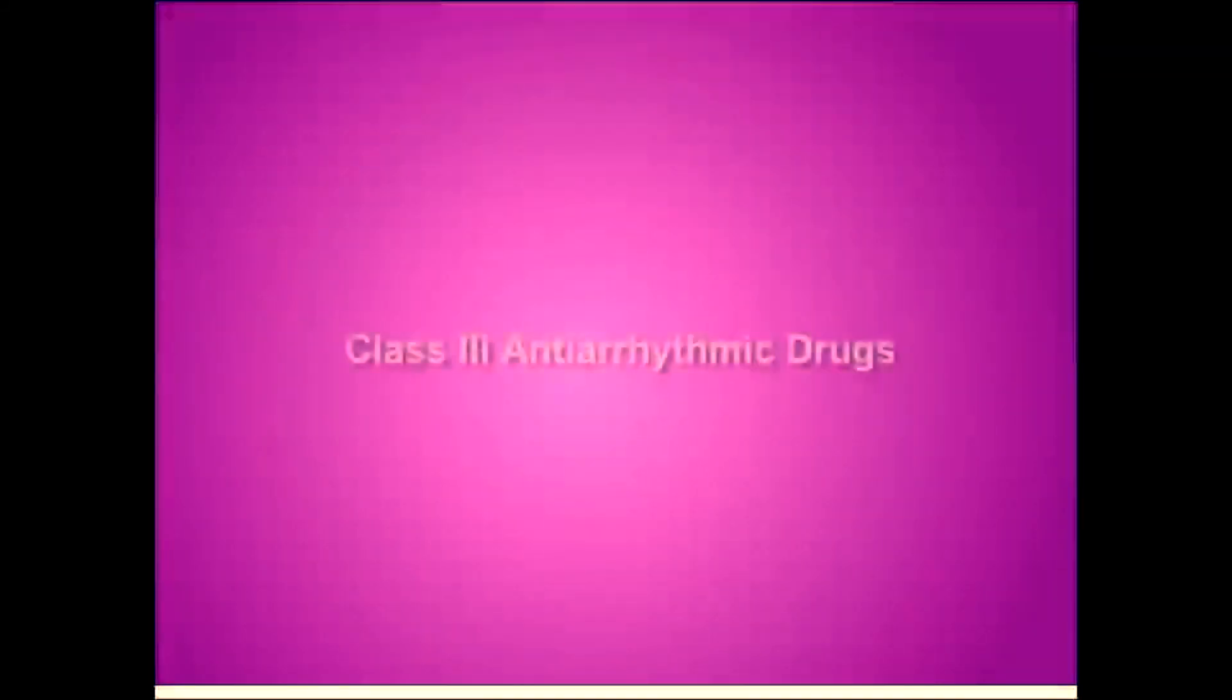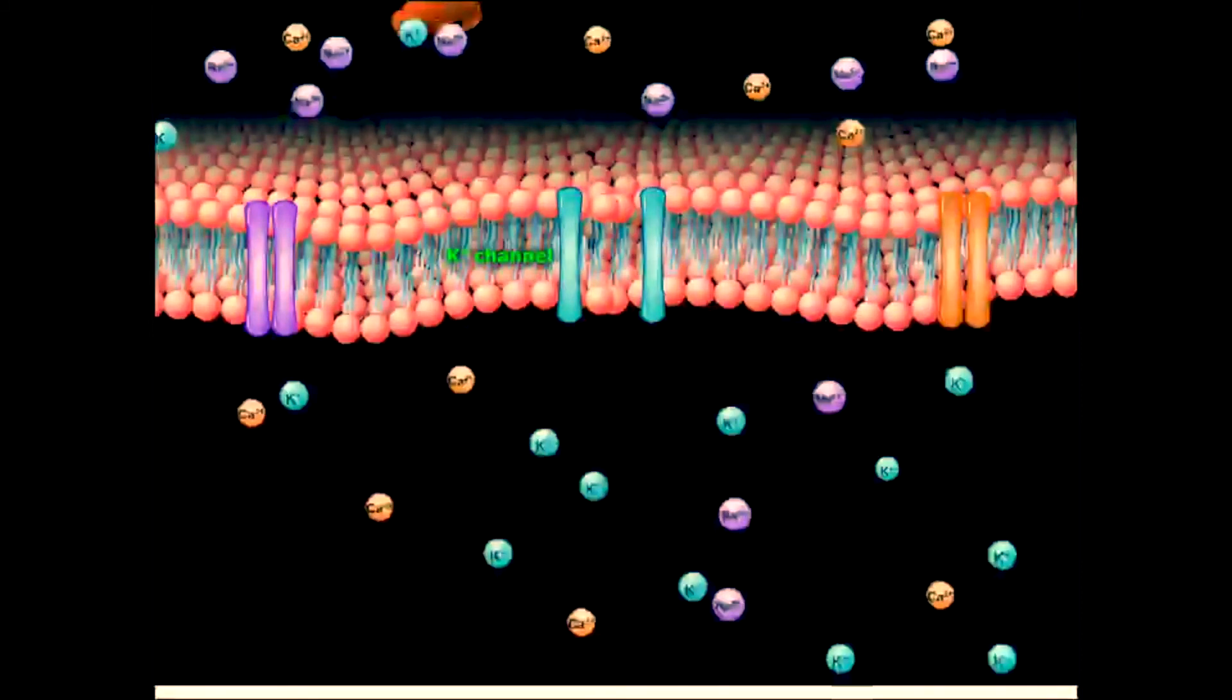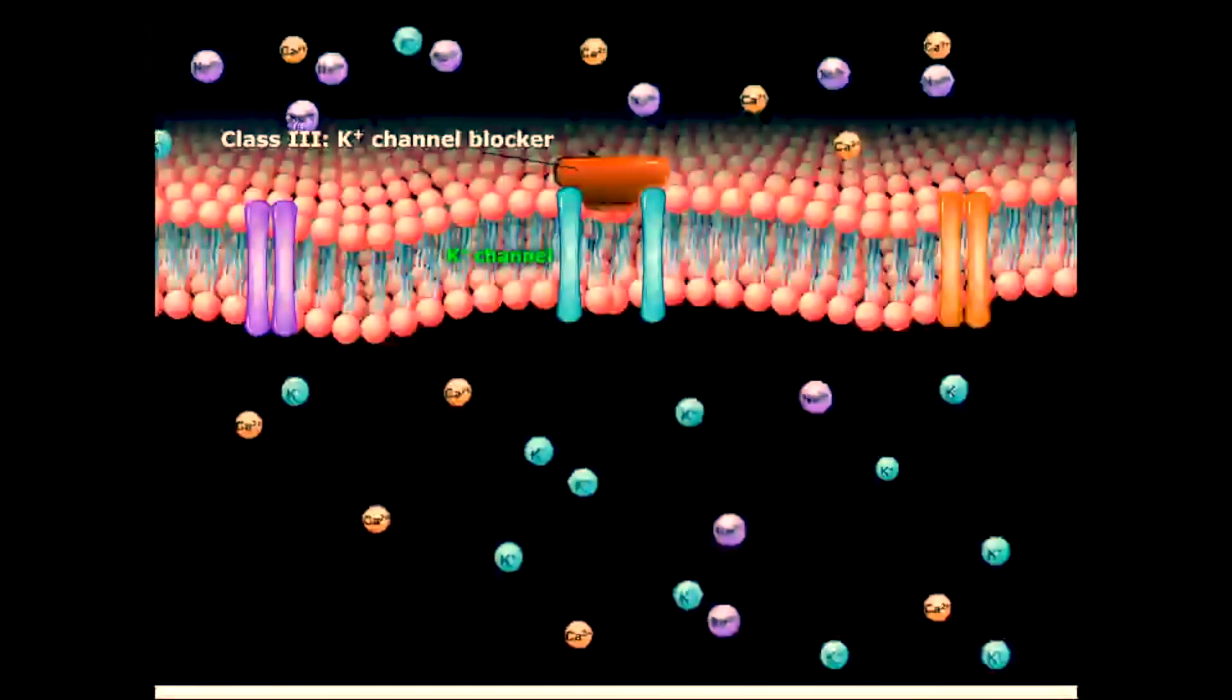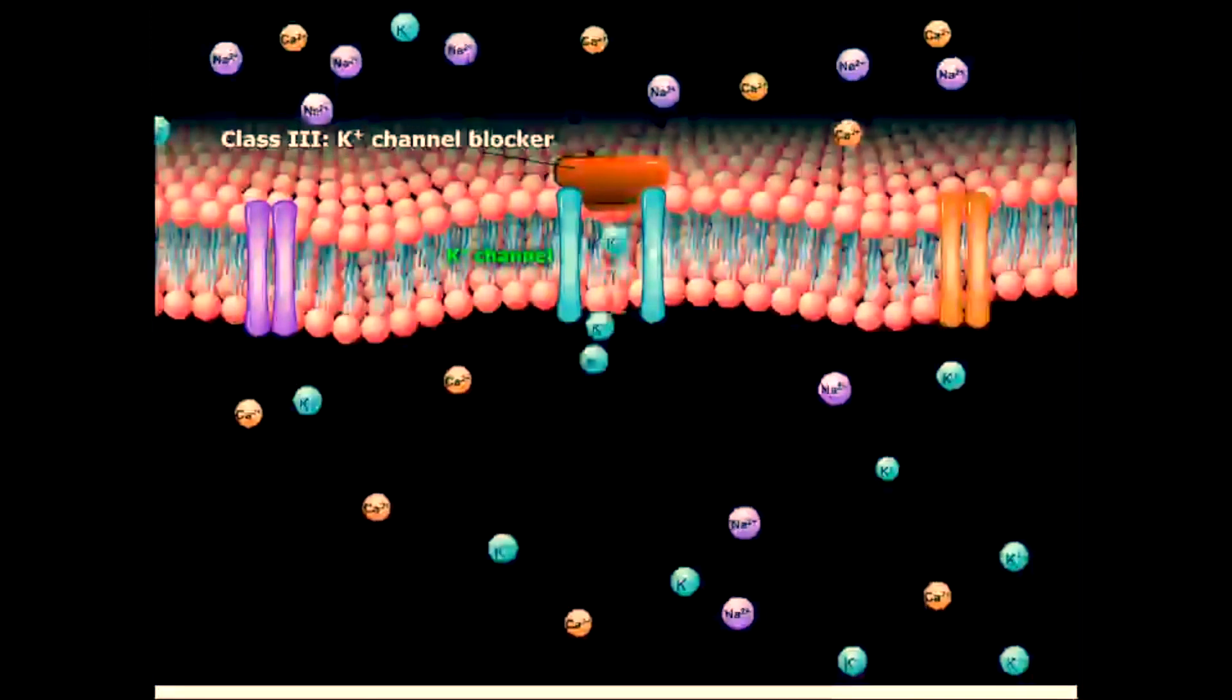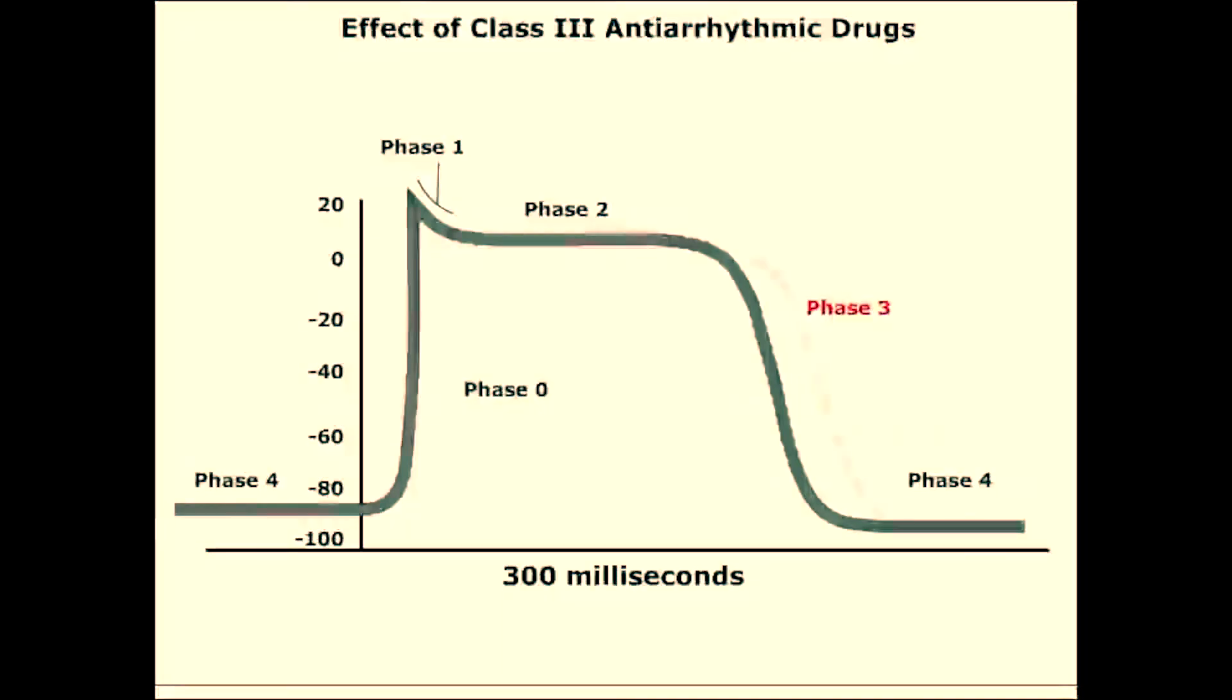Class 3 antiarrhythmic drugs, such as amiodarone, are potassium channel blockers. By blocking these channels, they prevent the efflux of potassium during repolarization. This graph illustrates the effect of class 3 drugs. Class 3 drugs prolong phase 3 without altering phase 0, thereby prolonging the effective refractory period.